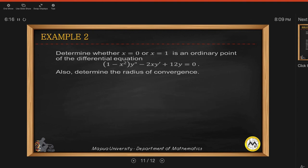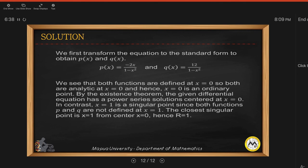For example, determine whether x equals 0 or x equals 1 is an ordinary point of the differential equation: 1 minus x squared y double prime minus 2xy prime plus 12y equals 0. And also determine the radius of convergence.